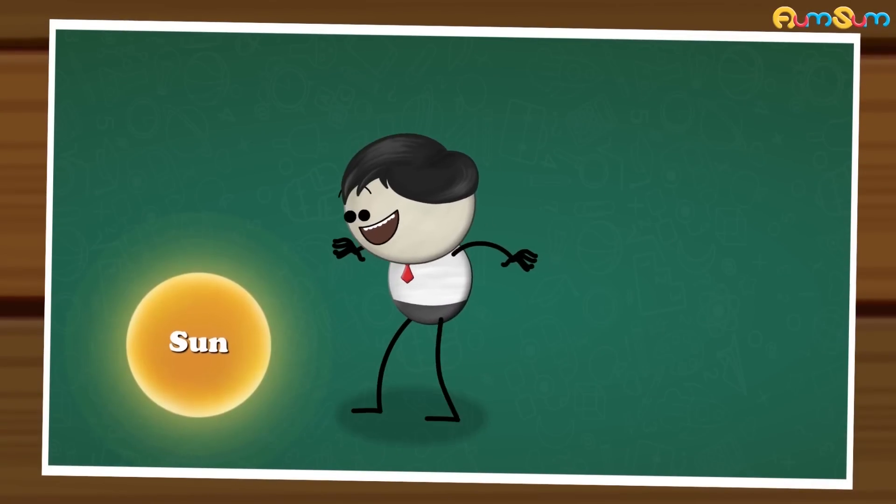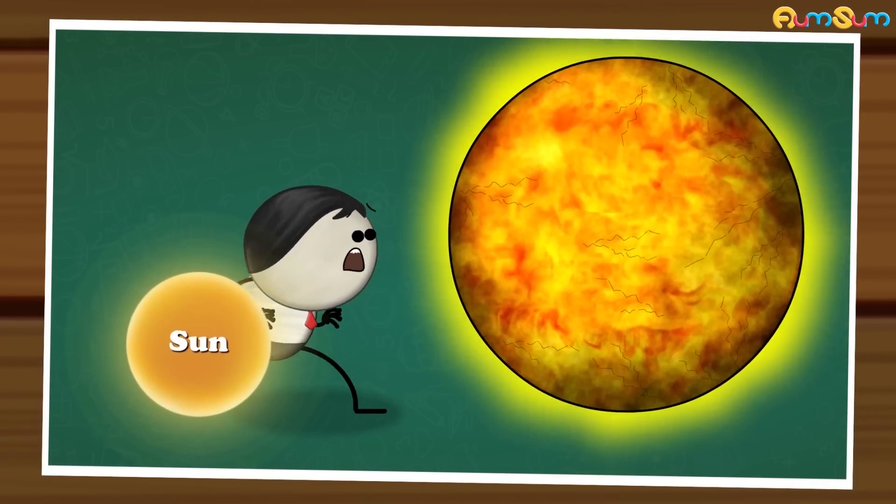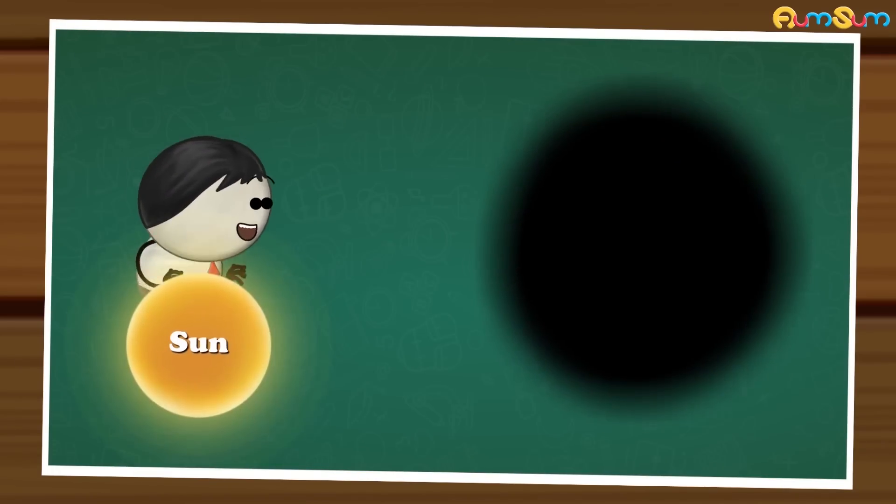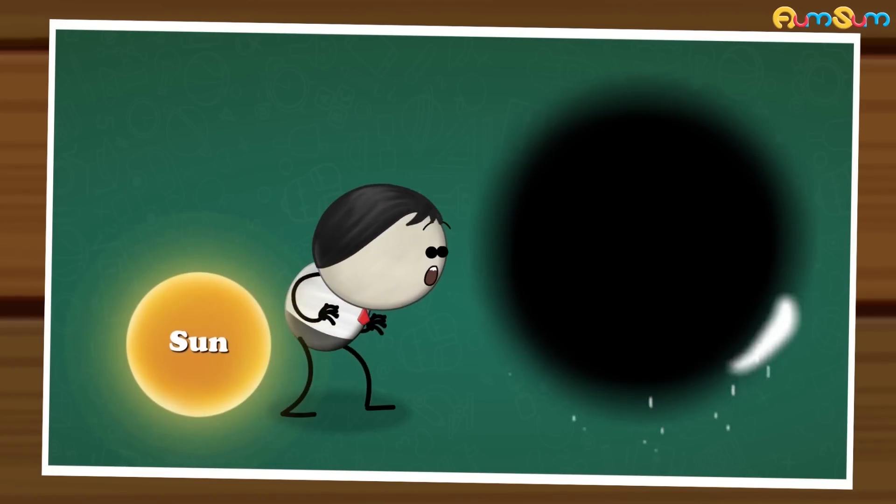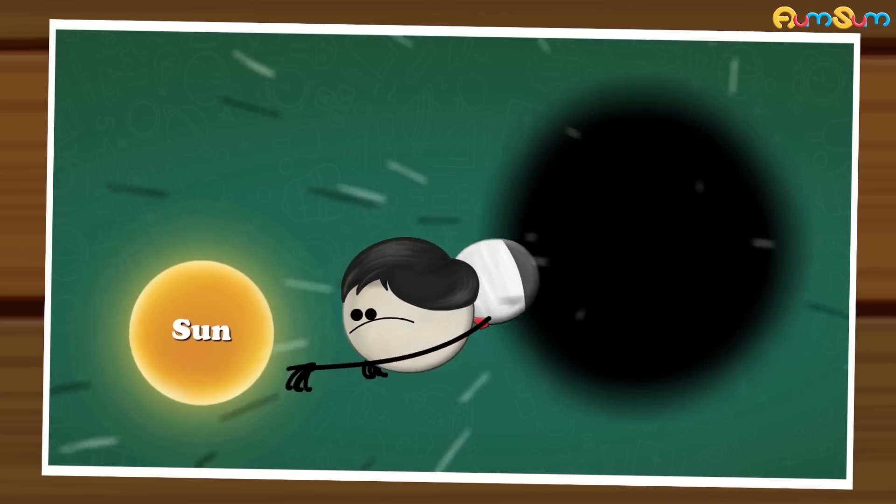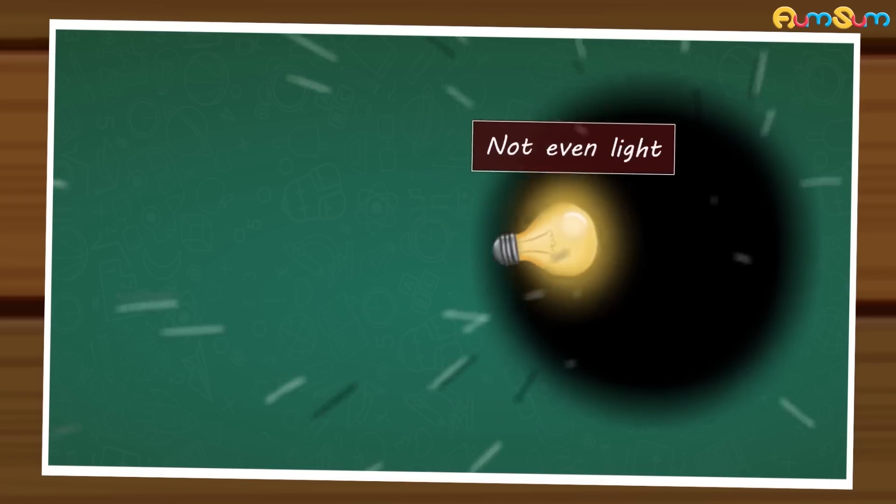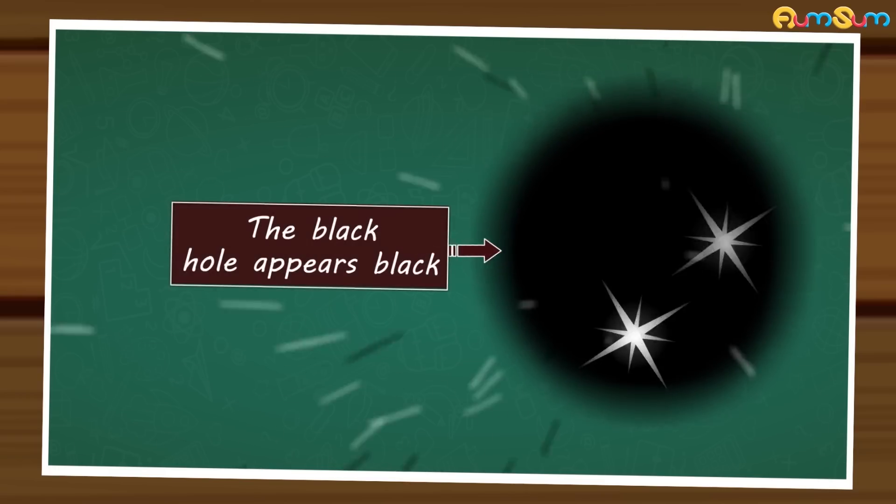Now, it is estimated that if a star has at least 20 times more mass than our sun, then the star collapses to form a black hole. The surface or boundary of a black hole is called event horizon. Nothing can escape from within the event horizon of a black hole, not even light. Hence, the black hole appears black.